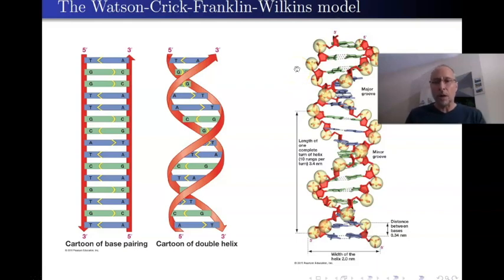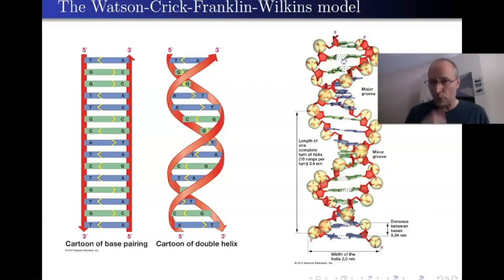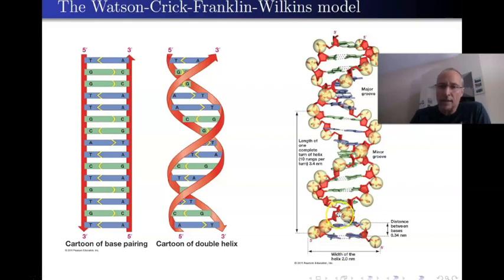Just to remind ourselves of what this model is: the Watson-Crick-Franklin-Wilkins model. Notice we have the double helix. This ball right here is a phosphate group — PO4 — then you have a deoxyribose sugar, a five-carbon sugar. You should go through that structure again — you drew it for the first exam. These structures are the bases, and the molecule has this nice twist to it, like two staircases wound around each other. It has the minor groove and the major groove. The width is only two nanometers, the distance between bases is 0.34 nanometers, and exactly 10 of these gives you one complete twist — so one complete twist of the double helix is 3.4 nanometers long.